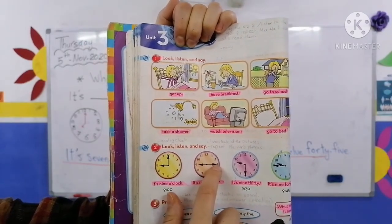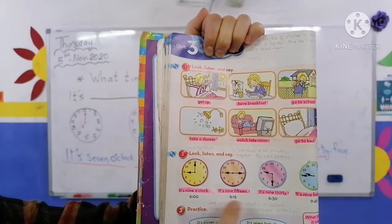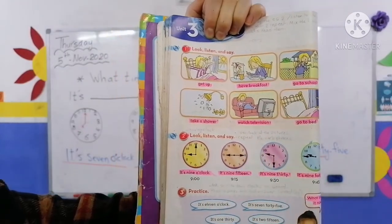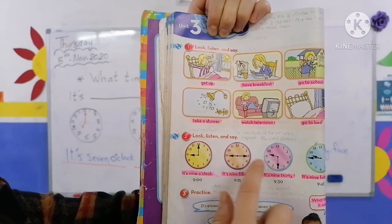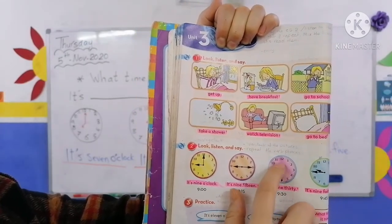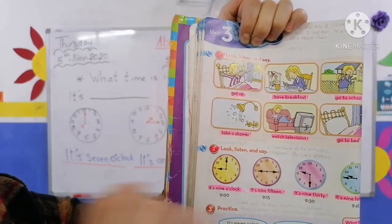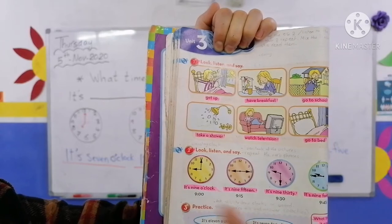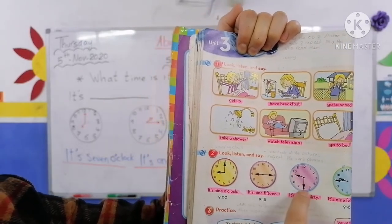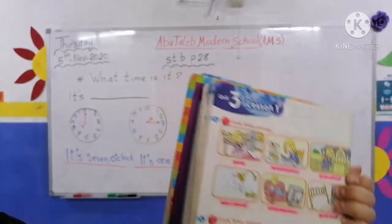What time is it here? It's nine thirty. The small hand (عقرب الساعات) is on nine, so it's nine. The big hand (عقرب الدقائق) is on six — meaning thirty, half. So it's nine thirty — التاسعة والنصف.